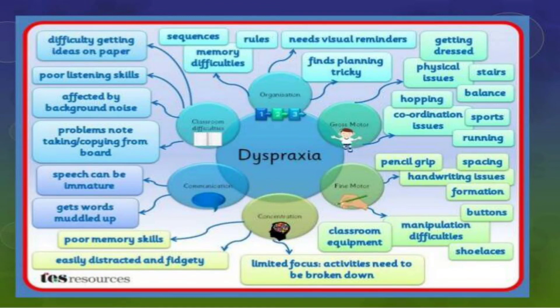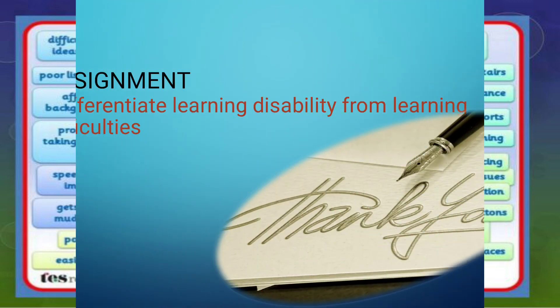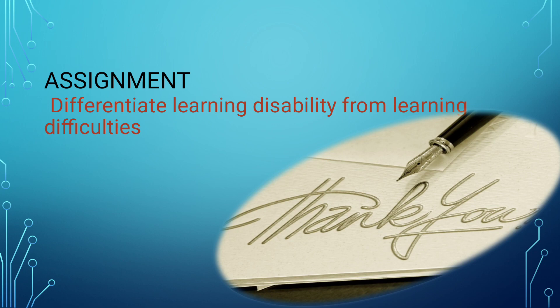Dyspraxia is a difficulty in coordinating the fine motor skills with hand-eye coordination, due to a sensory integration disorder. Students will be thinking something but cannot express it in a diagrammatic or written form. Your assignment will be to differentiate between a learning disability and a learning difficulty and write points about it. Thank you.